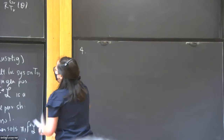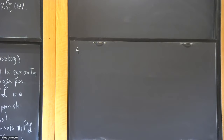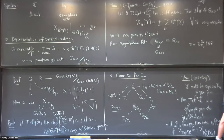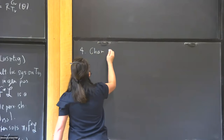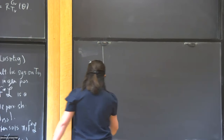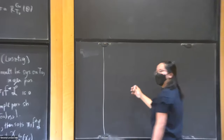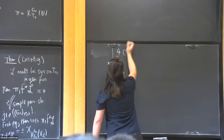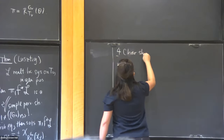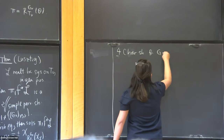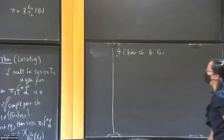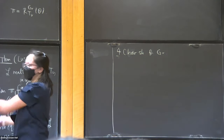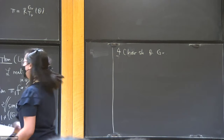So the thing to guess based on the structure is that the next thing is character sheaves for G_R. We can take everything from before and replace all the zeros by R and hope that something works out. We again have an analog of the Grothendieck-Springer resolution, where we replace all the zeros by Rs. The B_R is not actually a Borel, but it's playing the role of the Borel as analogous to the example over here.